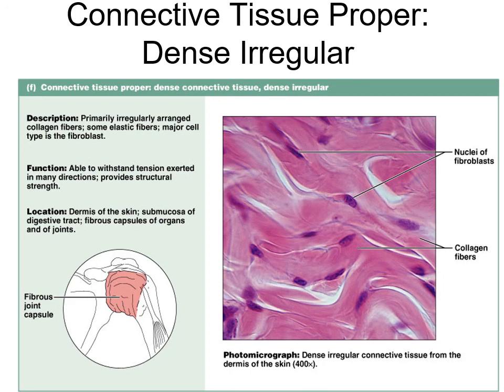Dense irregular connective tissue also covers the pericardium as the fibrous pericardium - it strongly attaches the heart to the sternum so it doesn't move around. Every bone has a fibrous periosteum and some cartilage has a fibrous perichondrium. These are all made up of dense irregular connective tissue - a strong fibrous tissue with lots of collagen fibers going in different directions.